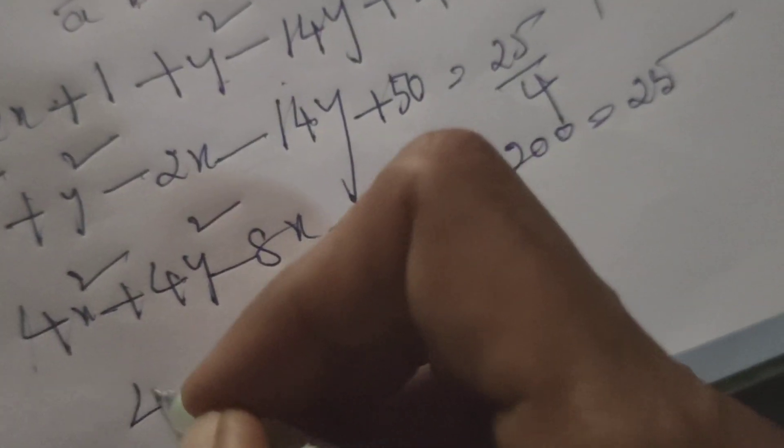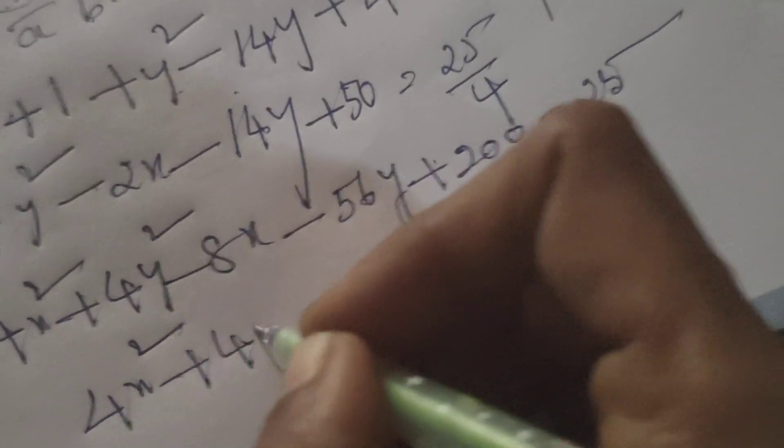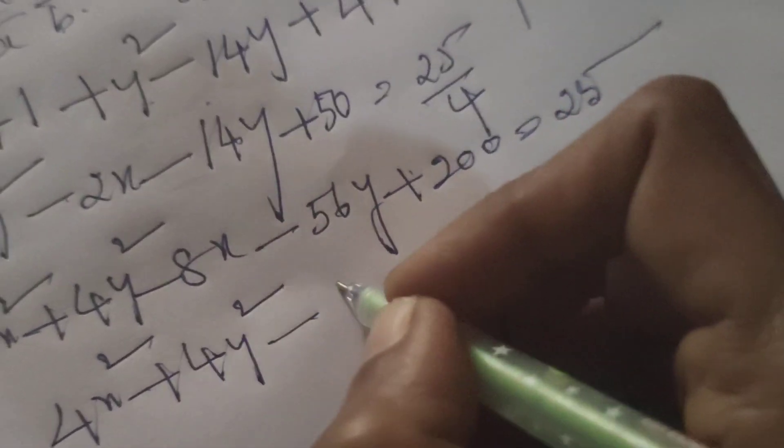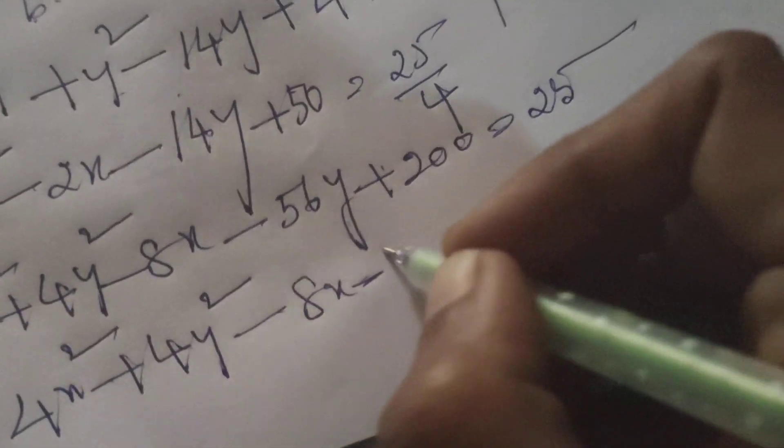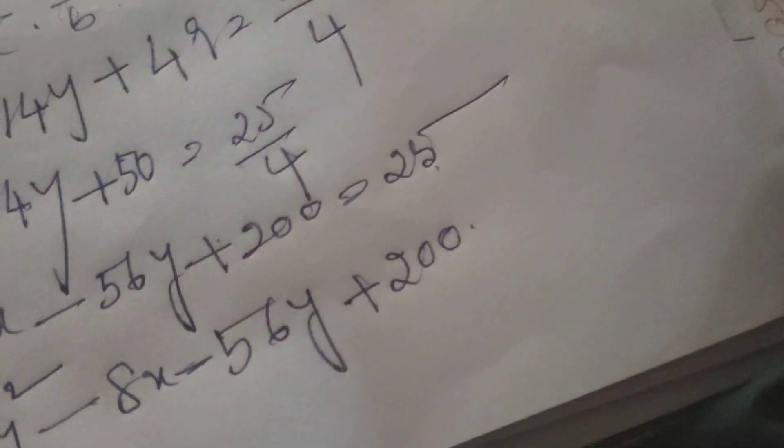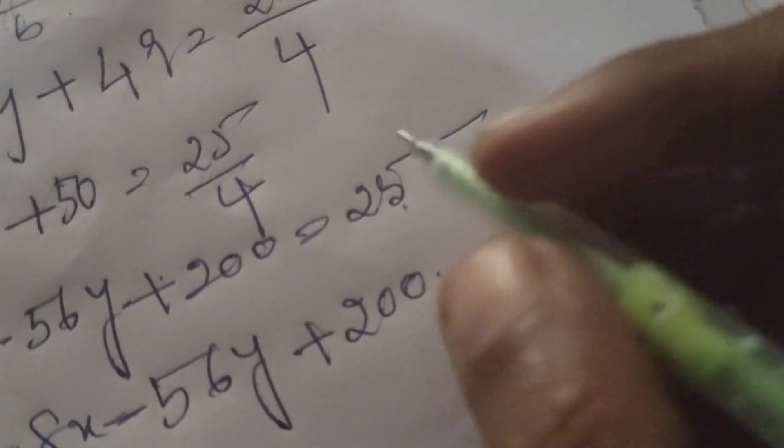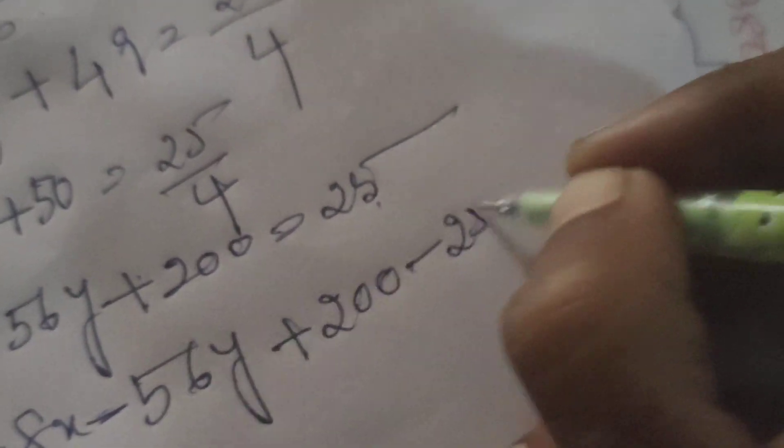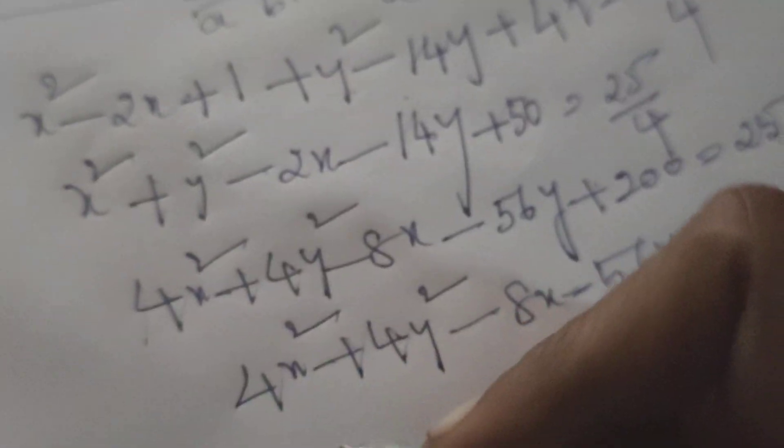Therefore 4x² + 4y² - 8x - 56y plus 200. This constant 25 will get to transpose LHS, minus 25 equals to 0.